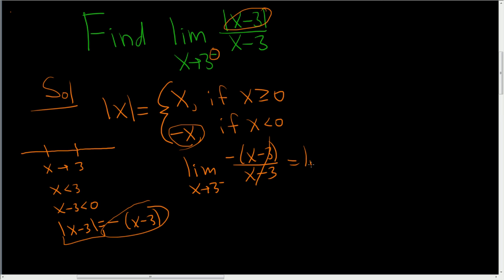These cancel, you get the limit as x approaches 3 from the left of negative 1, and that's just negative 1, and that's the answer.